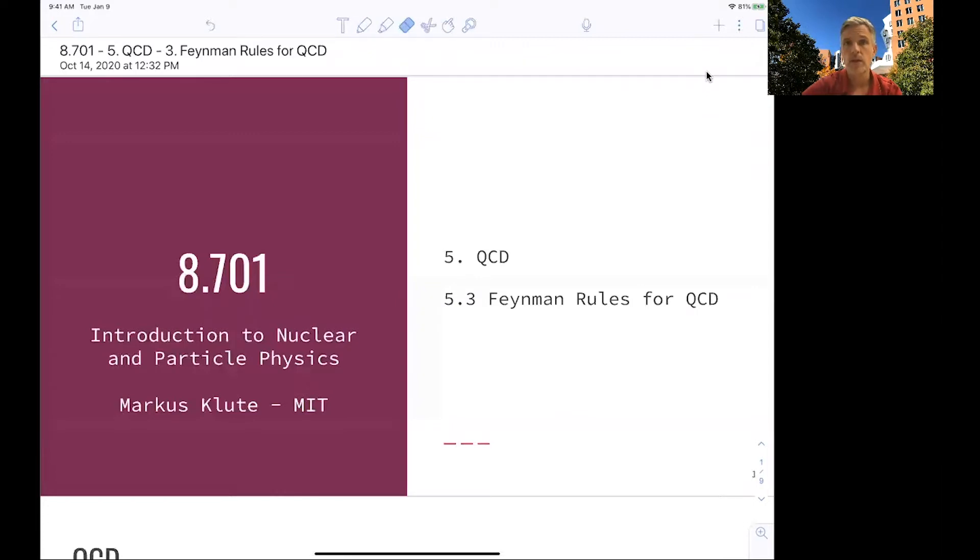A lot of work happened to get to this point. If you recall, we derived Feynman rules for a toy theory. Then we extended this to QED, quantum electrodynamics, introducing and keeping track of the spin of particles. And now in QCD, we have to do one step in addition.